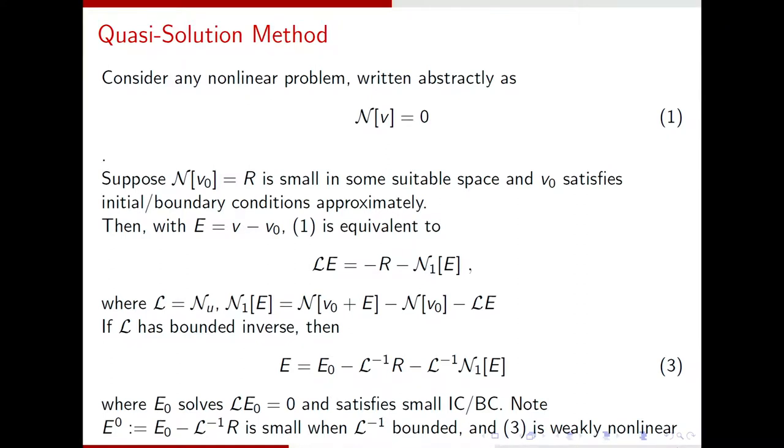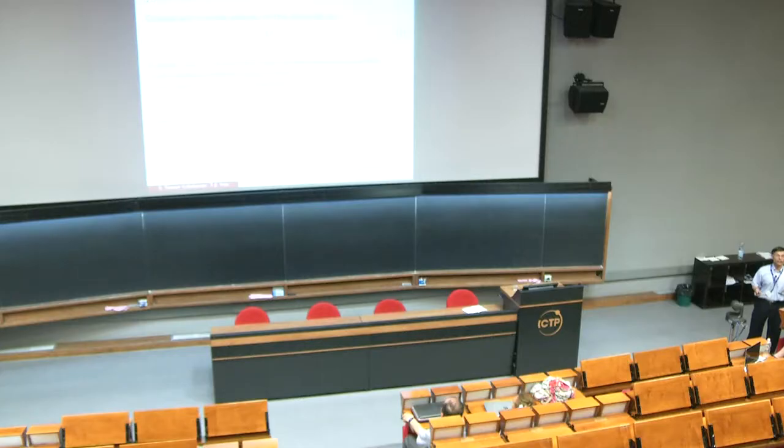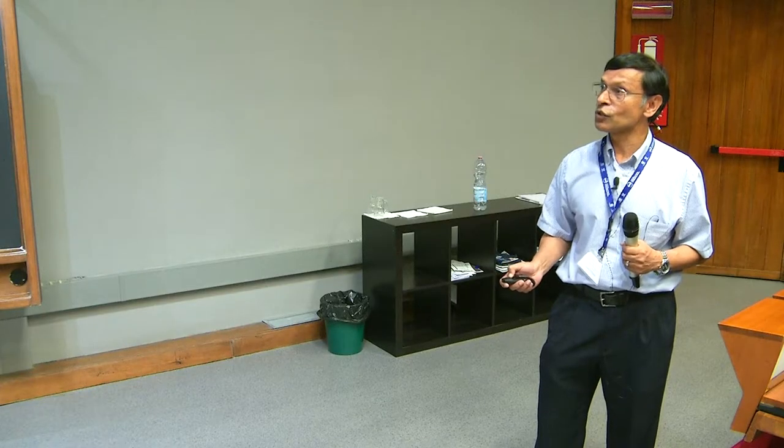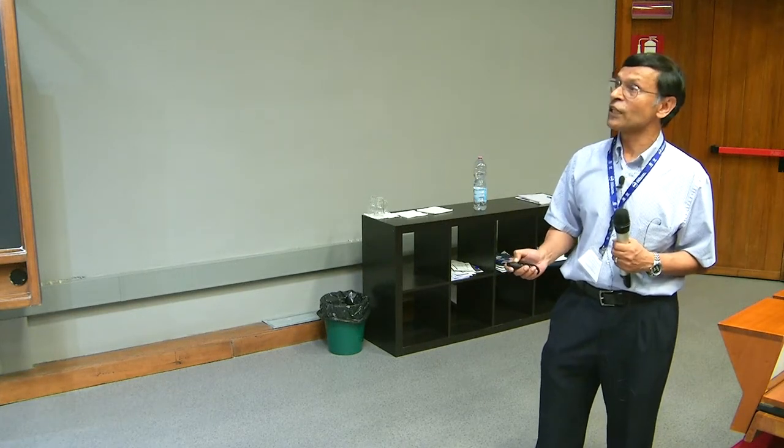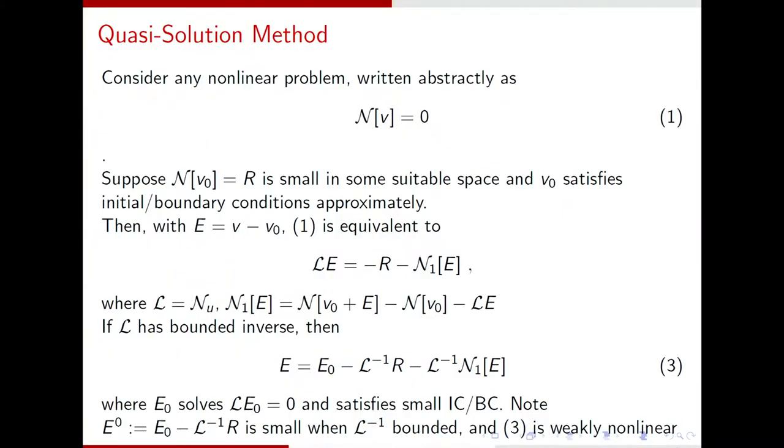The reason, if L happens to be invertible, and in many cases they are, and they can be proved to be, then what happens is you can invert this equation and write it in this form. So E0 happens, you need a little bit of E0, because remember, when you solve LE0 equals 0, it comes with perhaps small non-zero initial or boundary condition. So E0 takes into account the solution to this, which satisfies the missed boundary initial condition for V0. And L inverse is the inverse of this operator, and you can write it in this way.